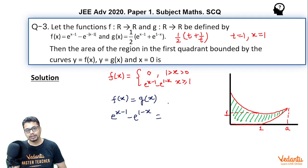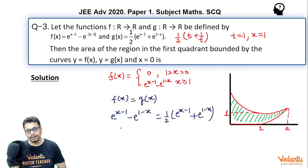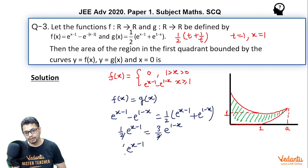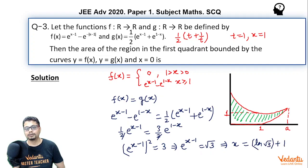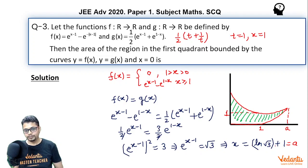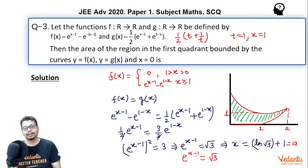And g(x) = ½ · (e^(x−1) + e^(1−x)). So effectively it becomes ½ · e^(x−1) = (3/2) · e^(1−x). Two cancels, and taking terms to one side: (e^(x−1))² = 3. So e^(x−1) = √3 (it can't be −√3 since exponentials are always positive). Therefore x = ln(√3) + 1, meaning a = ln(√3) + 1. This also means e^(a−1) = √3, which we will use directly in the integration.